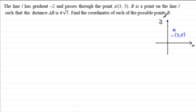So that's the point A. And we've got a line that passes through A with a gradient of minus 2, so that's going to be a line that's sloping downwards. So we have something looking like this. So that's our point A and this is our line L.